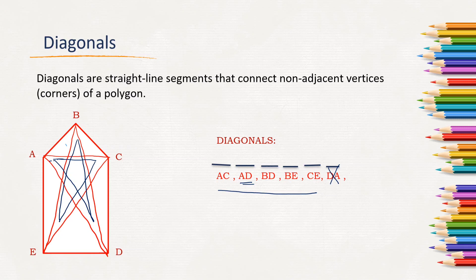So here we get 5 diagonals: line segment AC, line segment AD, line segment BD, line segment BE, and line segment CE are the diagonals for the given polygon.